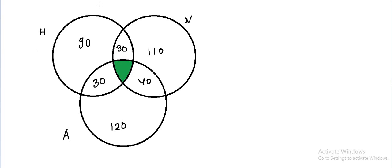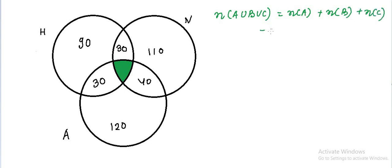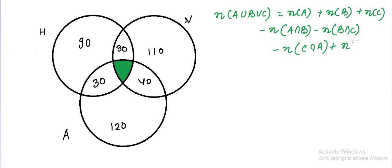We know a formula that the union of three sets is equal to N(A) plus N(B) plus N(C) minus A intersection B minus B intersection C minus A intersection C plus A intersection B intersection C. Let us write down this formula according to the given notation, where we represent A, B, C as Hotstar, Netflix, and Amazon.